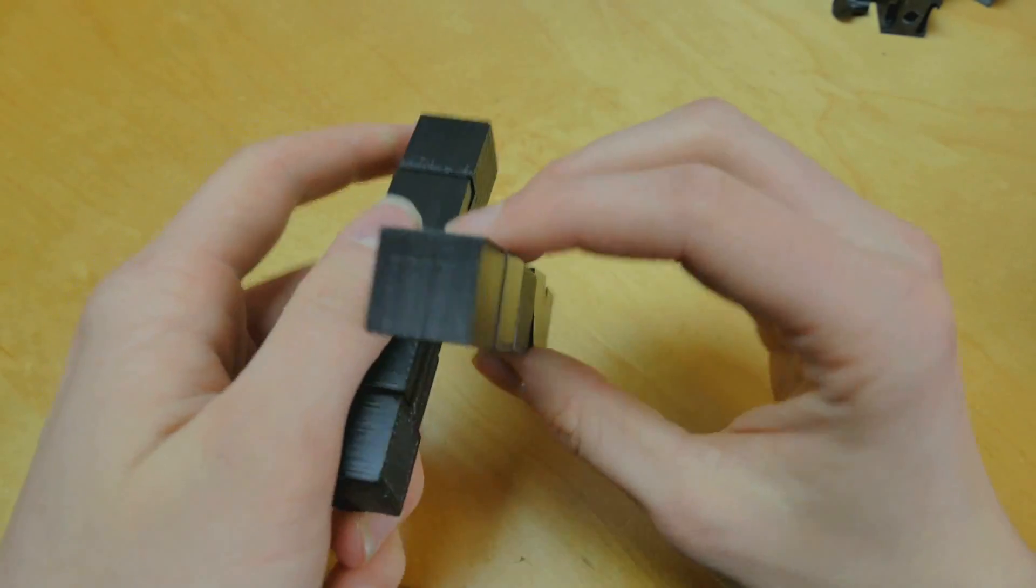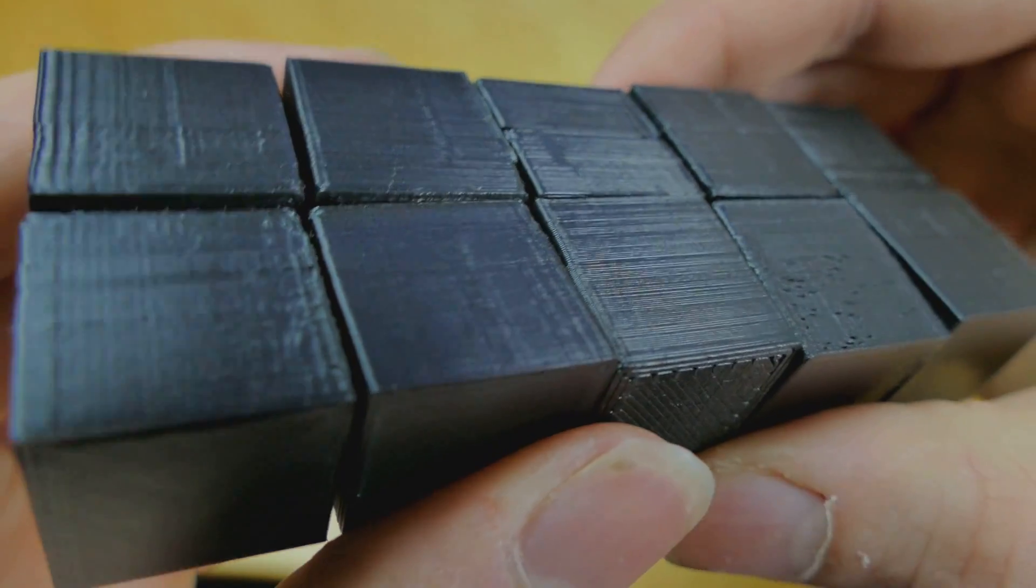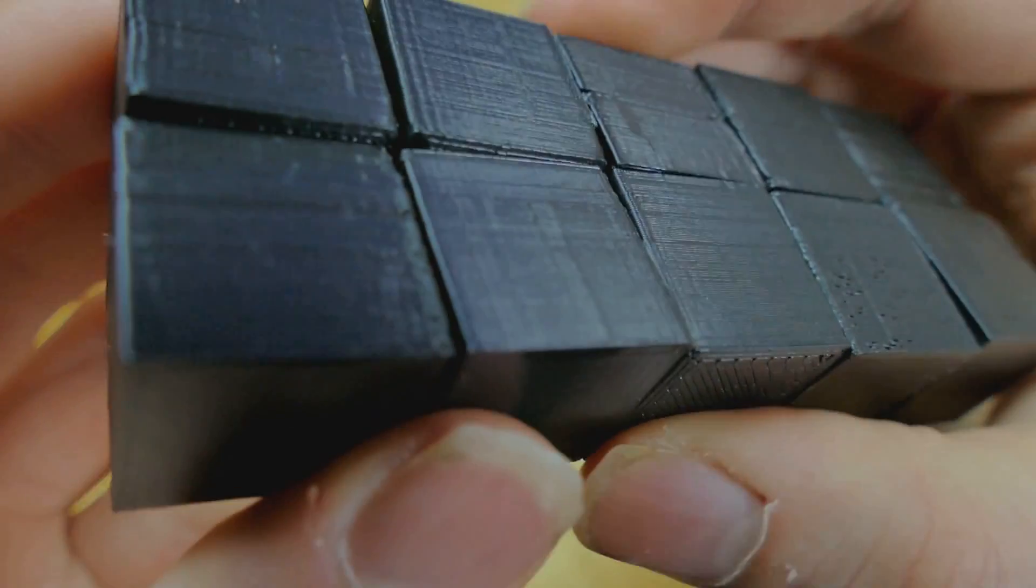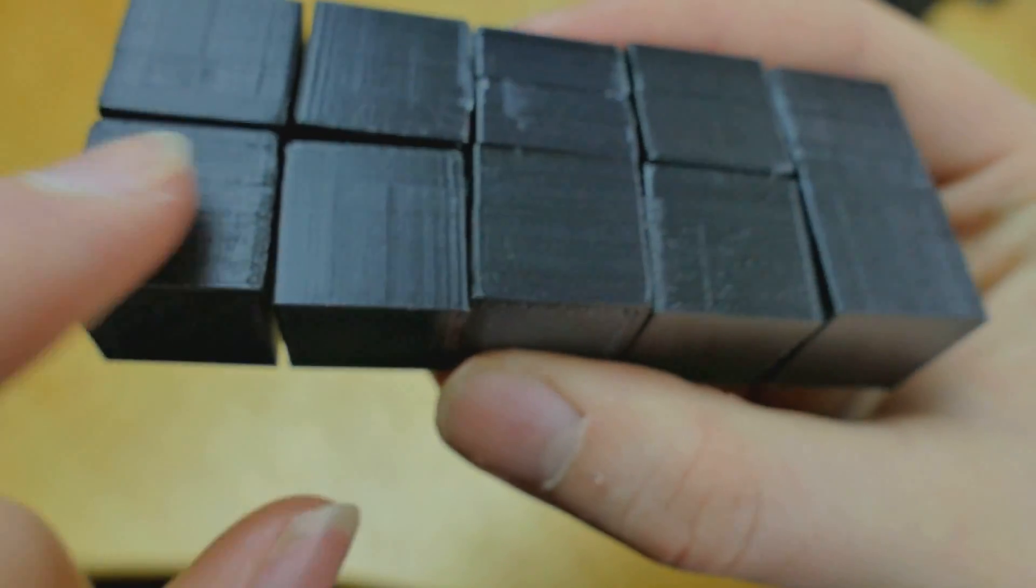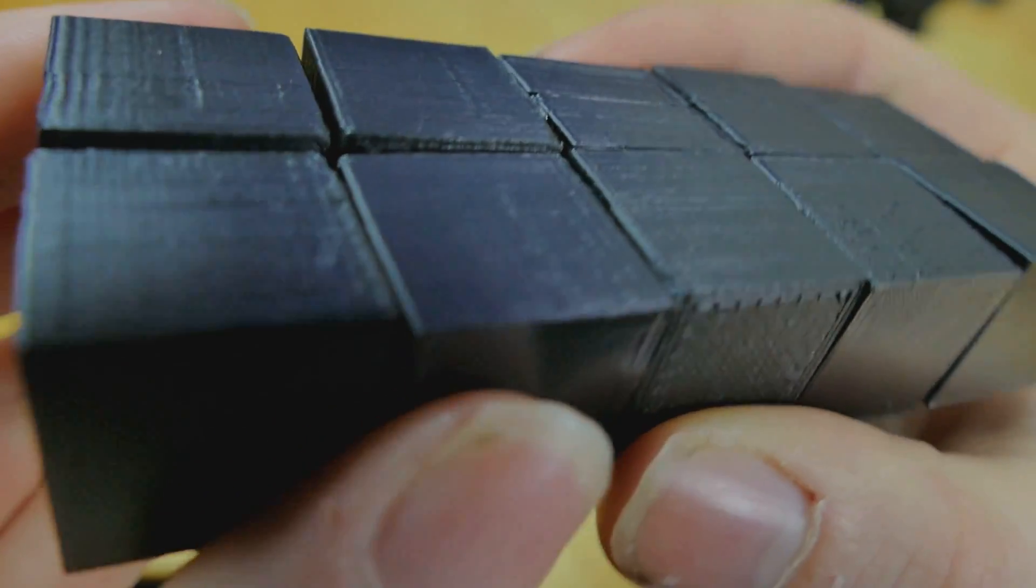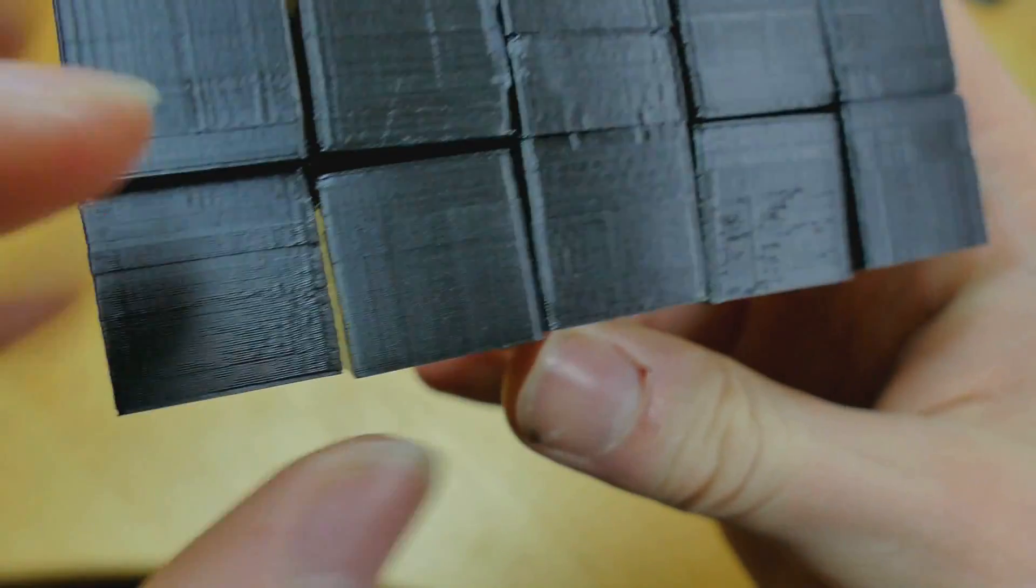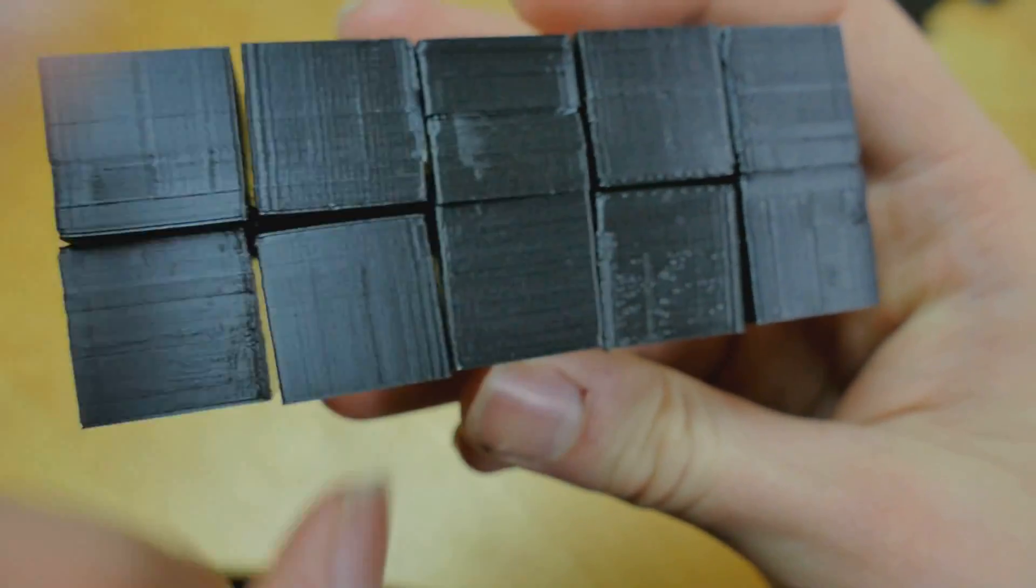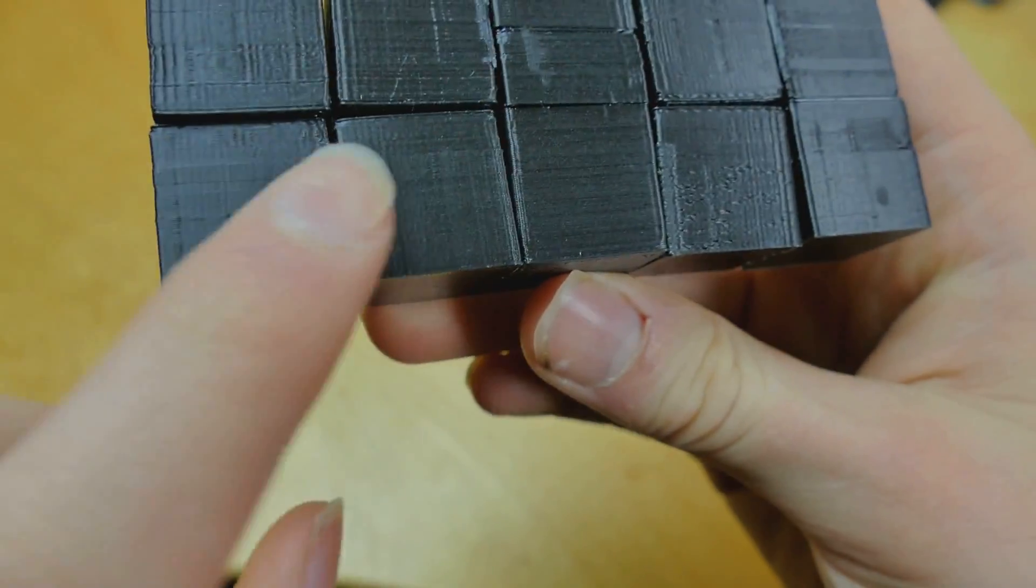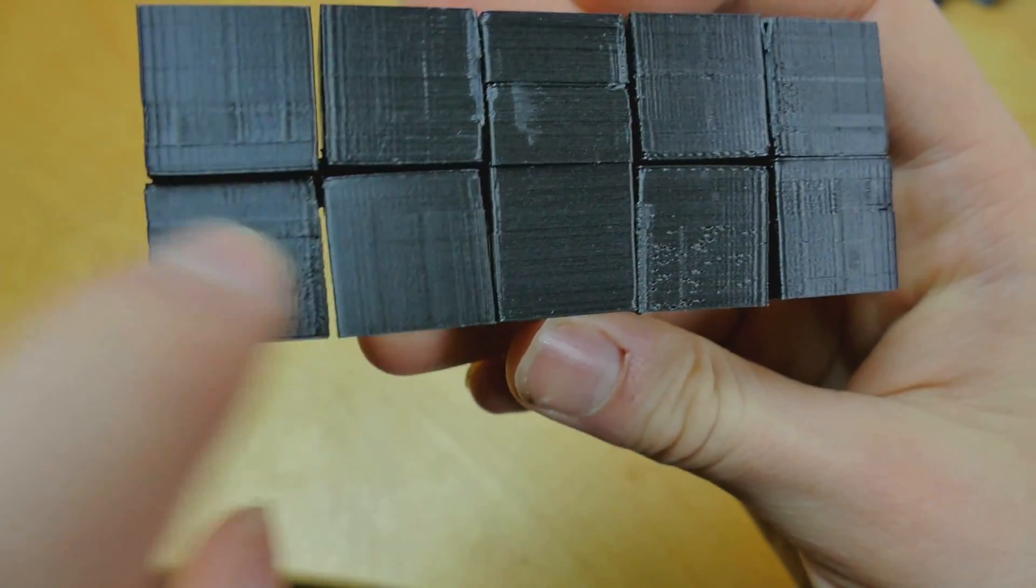As you can see, the finish on this puzzle is actually not too bad. It's a little rough in some places like right here, but for the most part I think I'm pretty happy with the results. These were printed at 0.2 millimeter layer height, and the outer edges and corners were printed at 0.1 millimeter layer height.